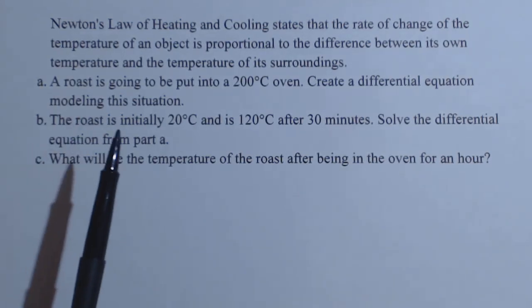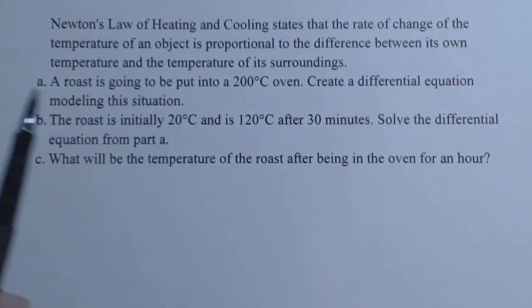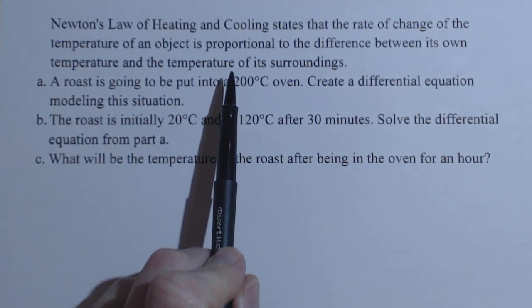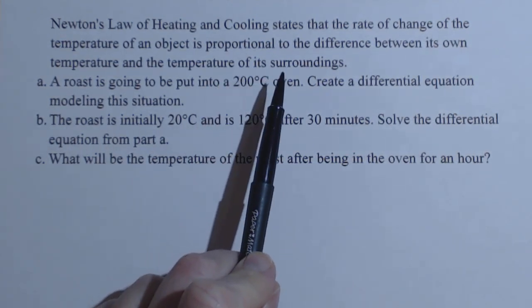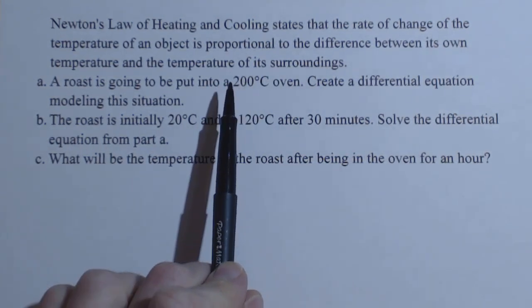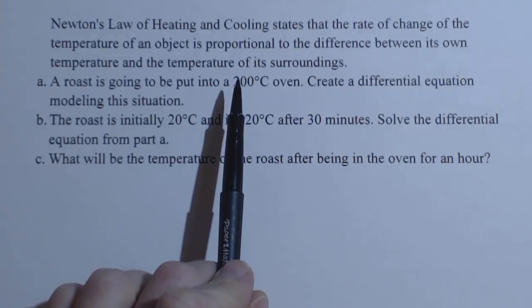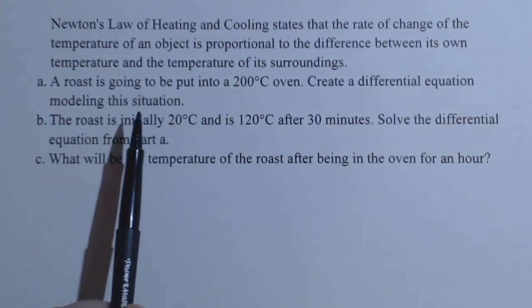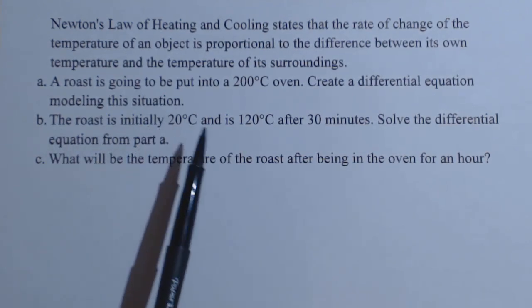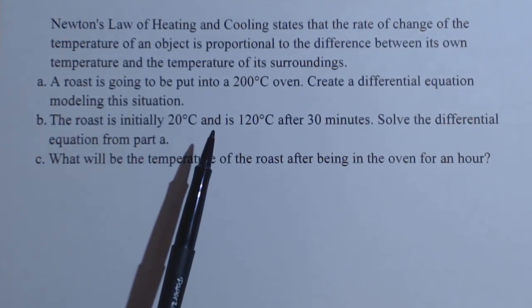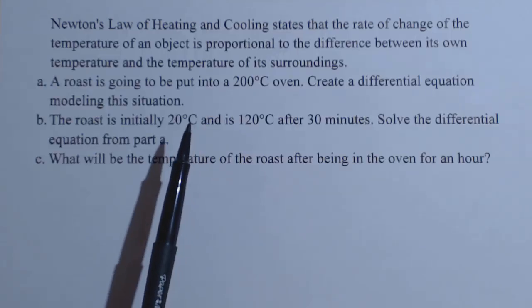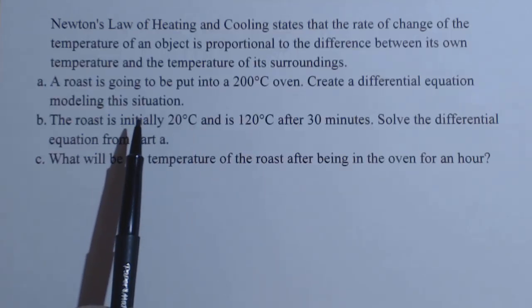We've got a heating problem here. Newton's law of heating and cooling states that the rate of change of the temperature of an object is proportional to the difference between its own temperature and the temperature of its surroundings. We've got a roast that's going into a 200 degree oven, and we want to create a differential equation based on this.